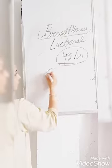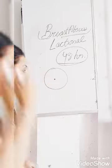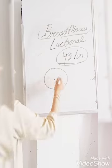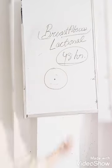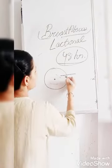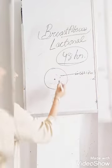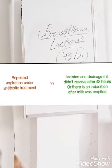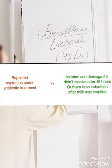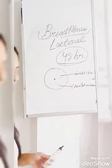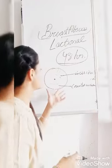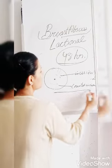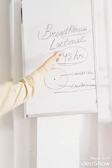In surgery, we make an incision on the breast and a counter-incision on the other side. We then introduce a drain through these incisions. The drain takes out all the pus and purulent discharge from the abscess. That is how surgery is done in lactational breast abscess.